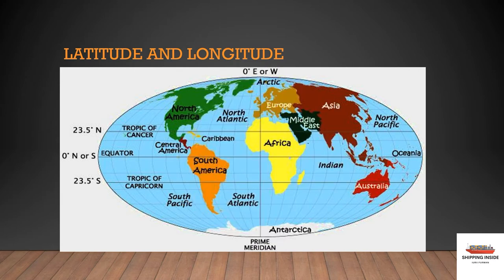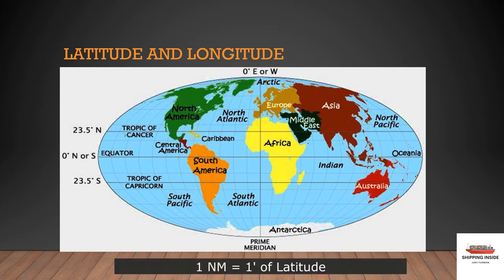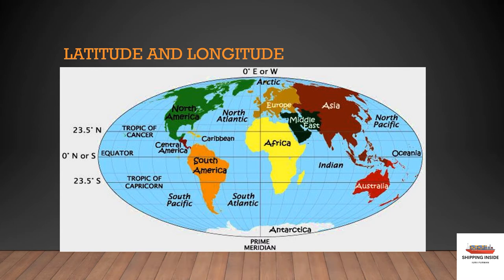Parallels of latitude serve also for another purpose, because distances at sea are measured in nautical miles. One nautical mile equals one minute of latitude. So if you travel 60 miles from north to south, your latitude will be changed by only one degree. Accordingly, speed at sea is measured in knots. One knot equals one nautical mile per hour.